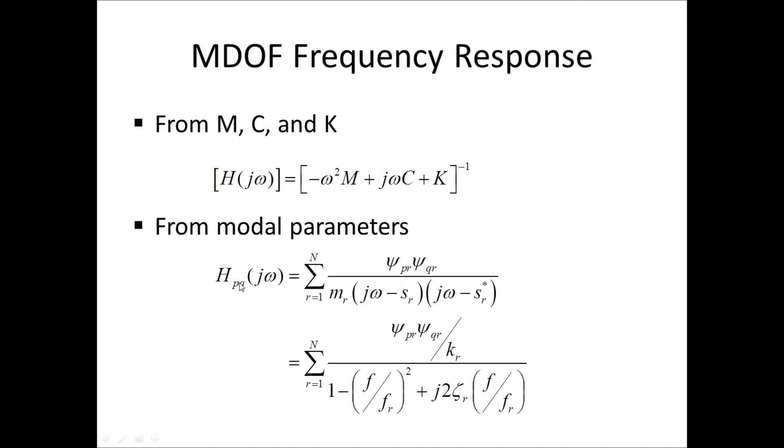But if we have the modal parameters, we can instead, for a single frequency response function, compute it as a sum over all the modes of the mode shape coefficient psi PR times psi QR, the other mode shape coefficient. We are talking about a frequency response between DOF P and Q. Response in P, force in Q. So the sum of this product of mode shape coefficients divided by the modal mass times j omega minus SR times j omega minus SR complex conjugate,